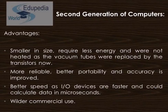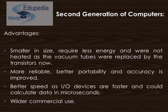Features include they are smaller in size, require less energy, and did not heat as much since vacuum tubes were replaced by transistors. They are more reliable, with better portability and much improved accuracy. They have better speed as input/output devices are faster and could calculate data in microseconds. Commercial use was also much more improved.